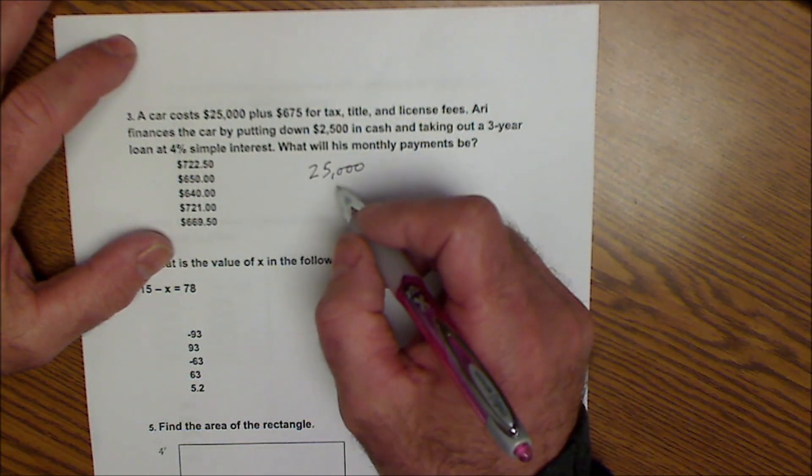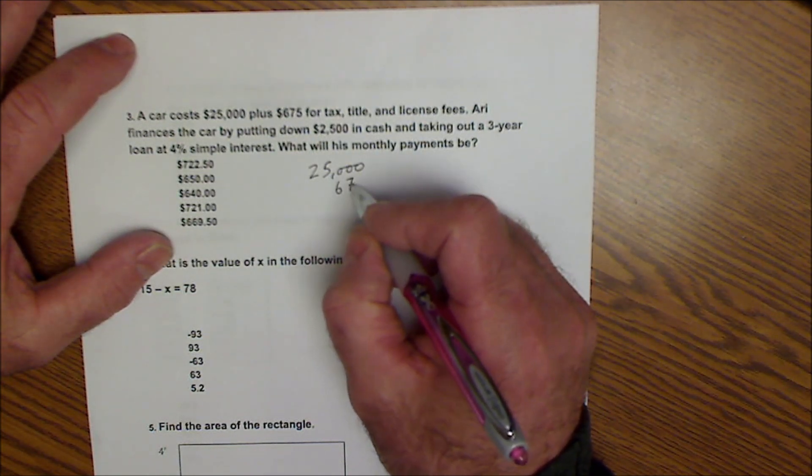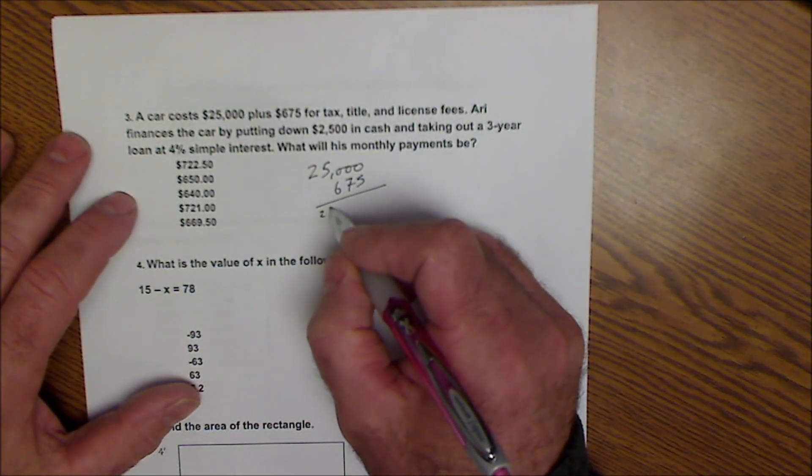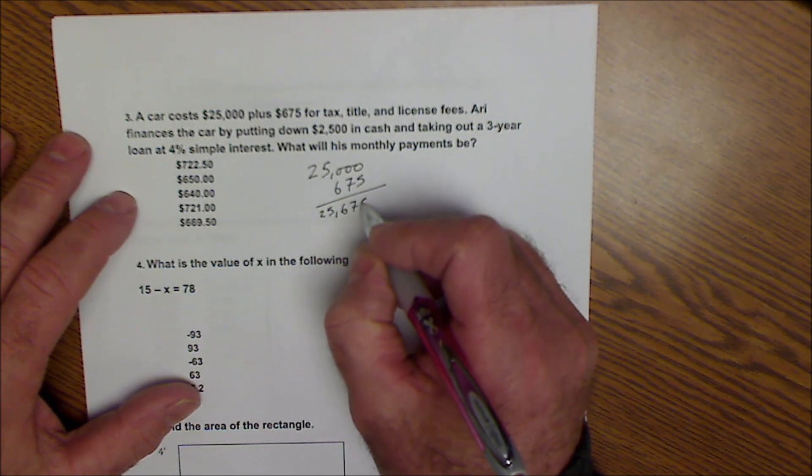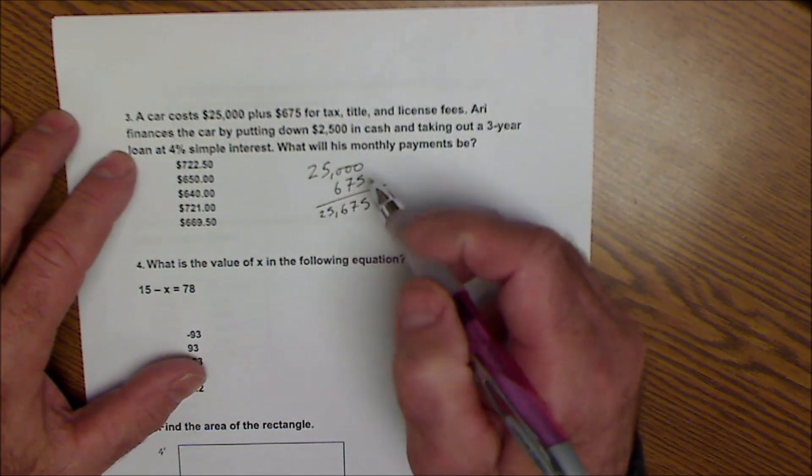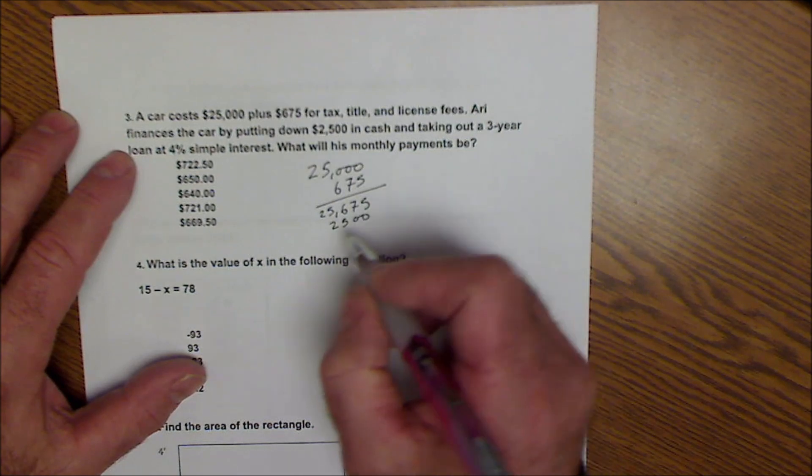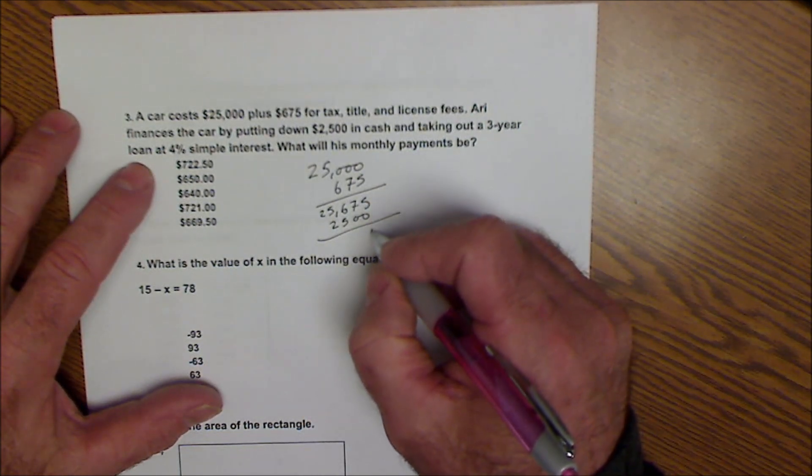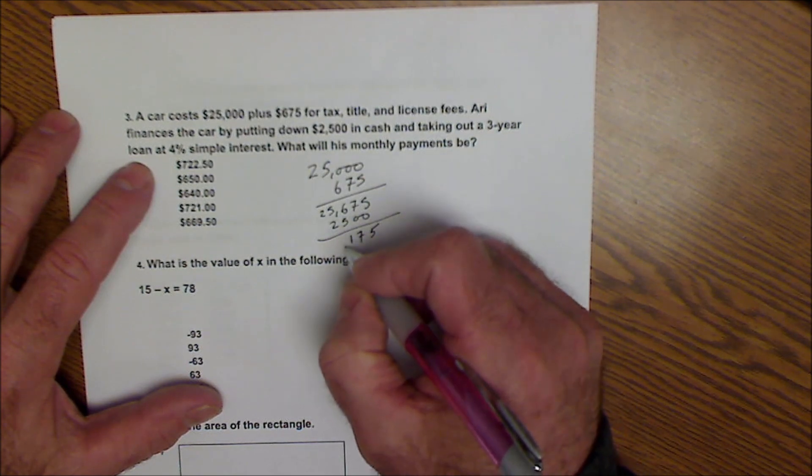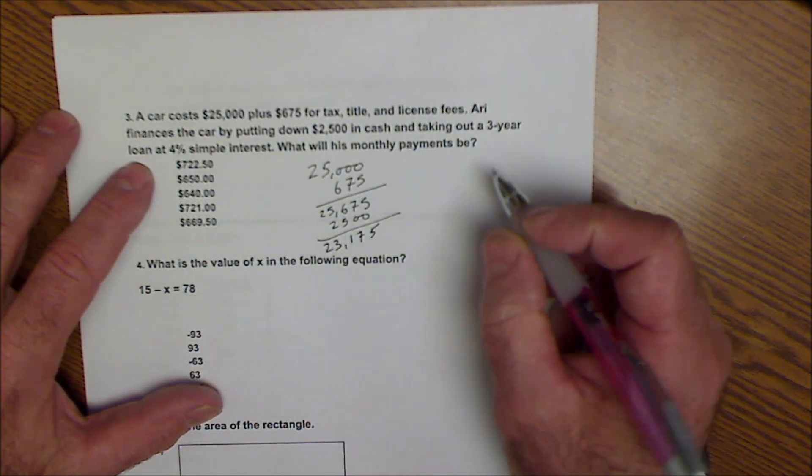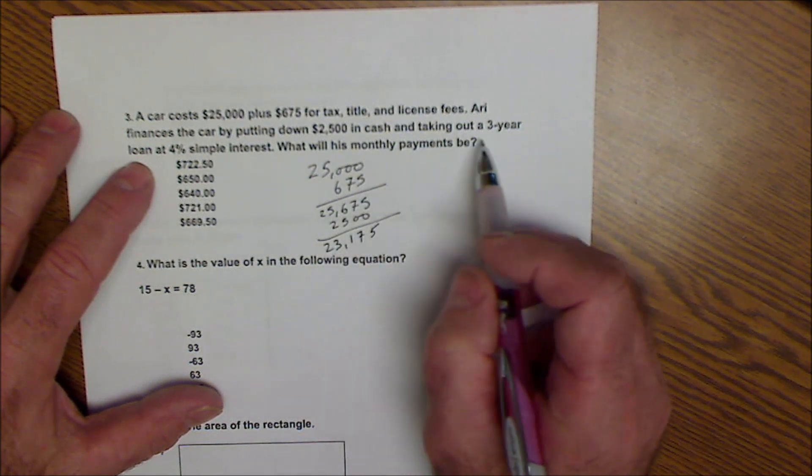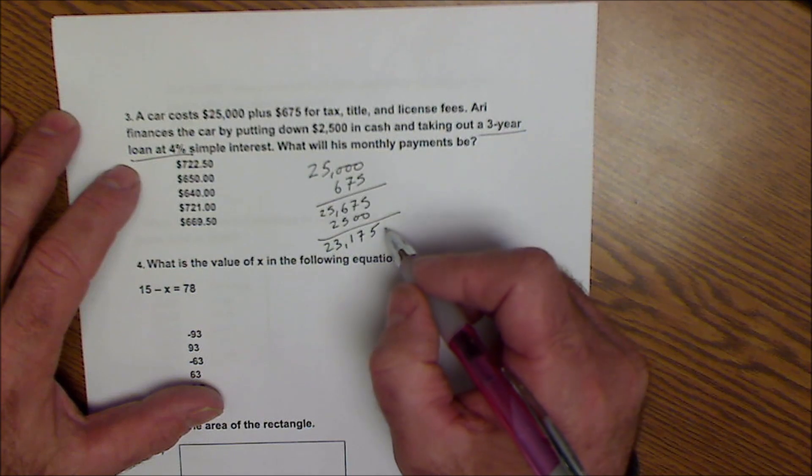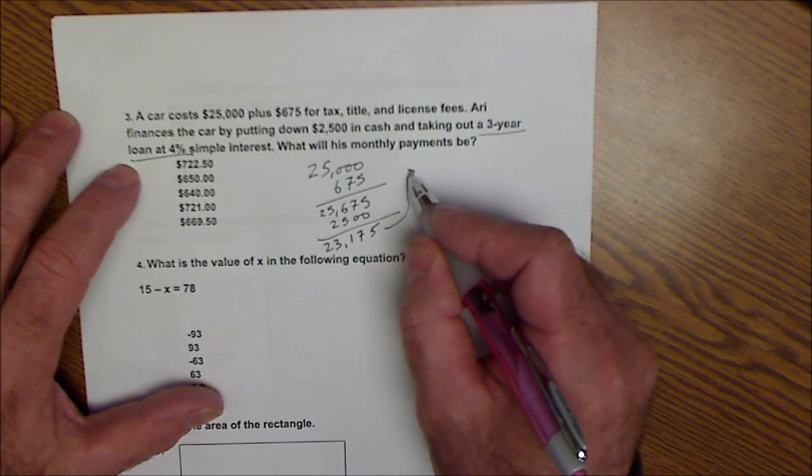So a car costs $25,000 plus $675 for tax and title. So the total cost of the car is $25,675. I put $2,500 down, so I'm going to subtract the down payment from the total cost of the vehicle. So $23,175. I have a three-year loan at 4% interest, so I have to figure out how much interest I'm going to pay on this car.